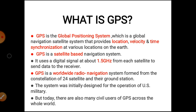GPS is a satellite-based navigation system. It uses a digital signal at about 1.5 GHz from each satellite to send data to the receiver. GPS is a worldwide radio navigation system formed from a constellation of 24 satellites and their ground stations. The system was initially designed for U.S. military operations, but today there are many civil users of GPS across the whole world.